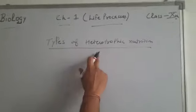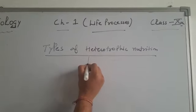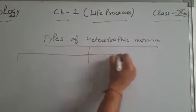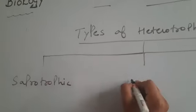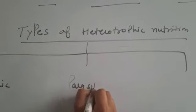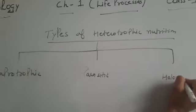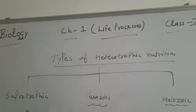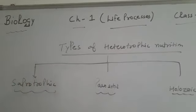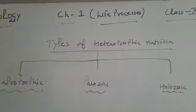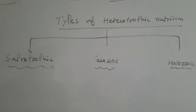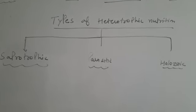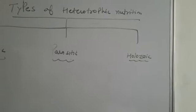Next we will discuss the types of heterotrophic nutrition. There are three types: first is saprophytic, second is parasitic, and third is holozoic. In saprophytic nutrition, the organism obtains food from dead decaying matter like dead plant bodies, dead animals, and rotting matter. An example is fungi.